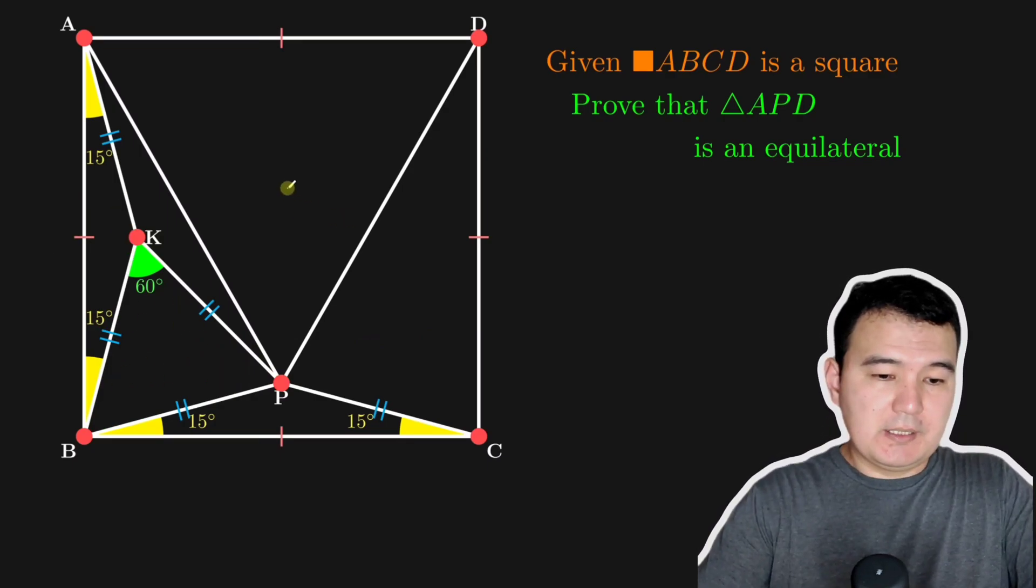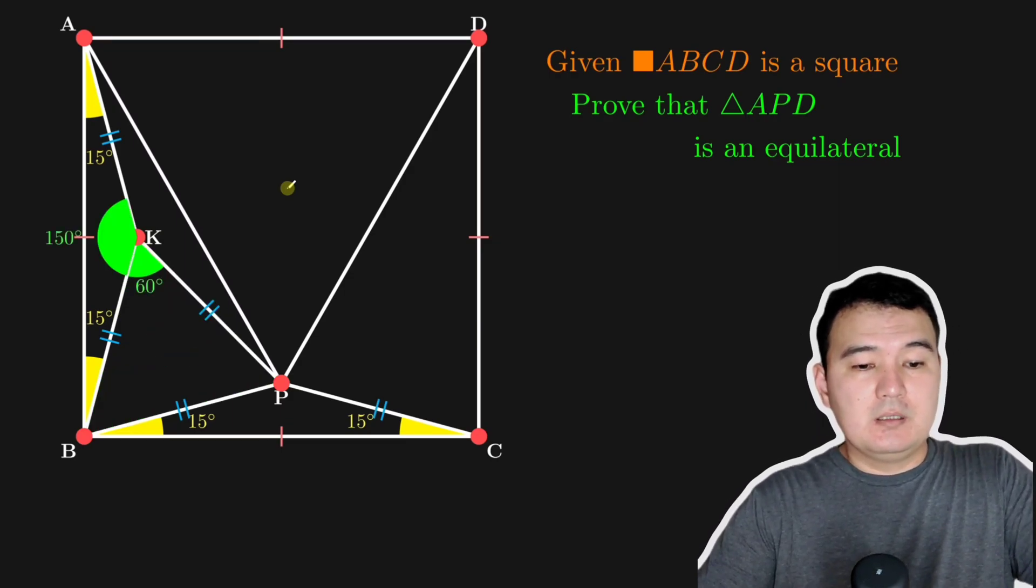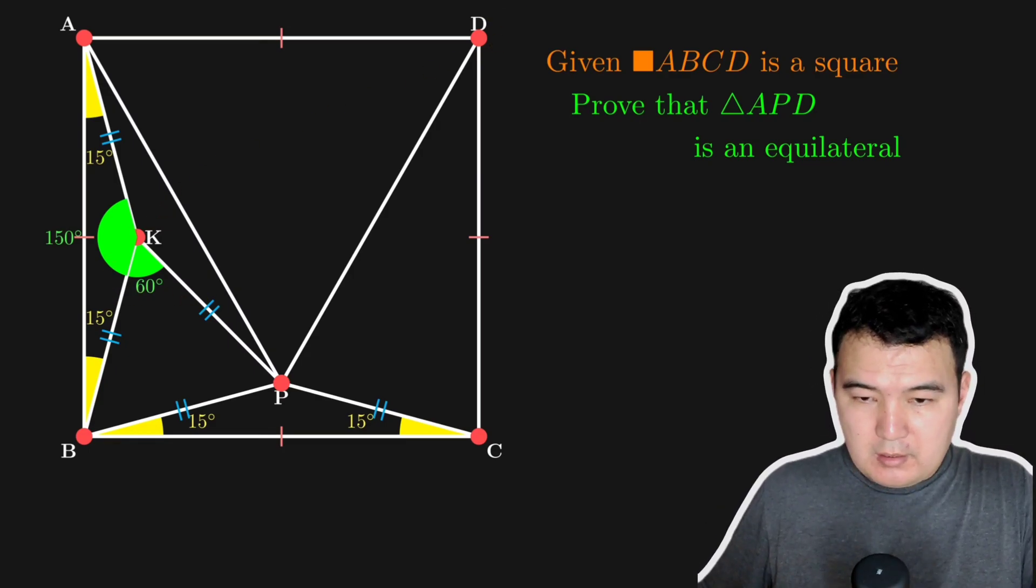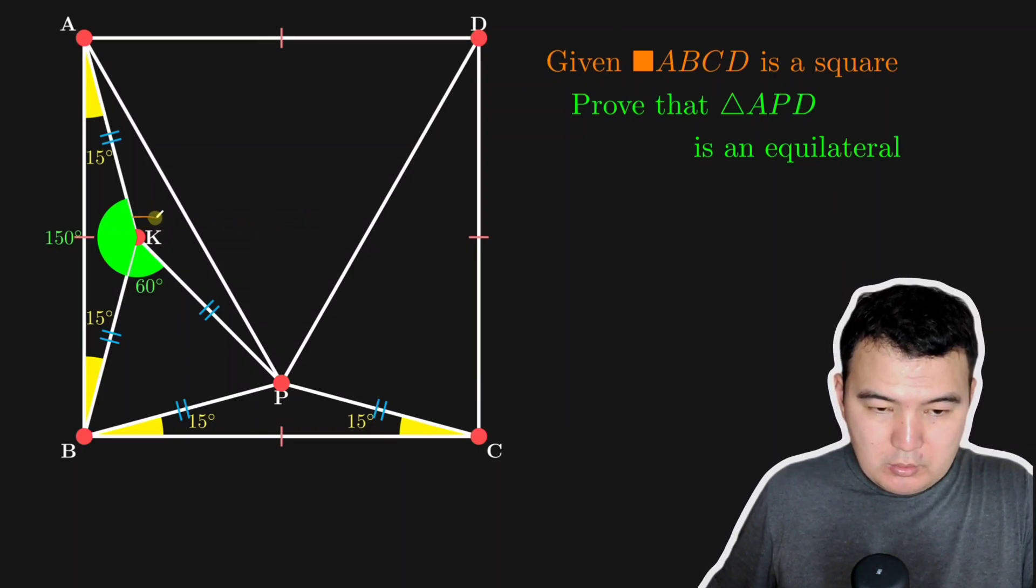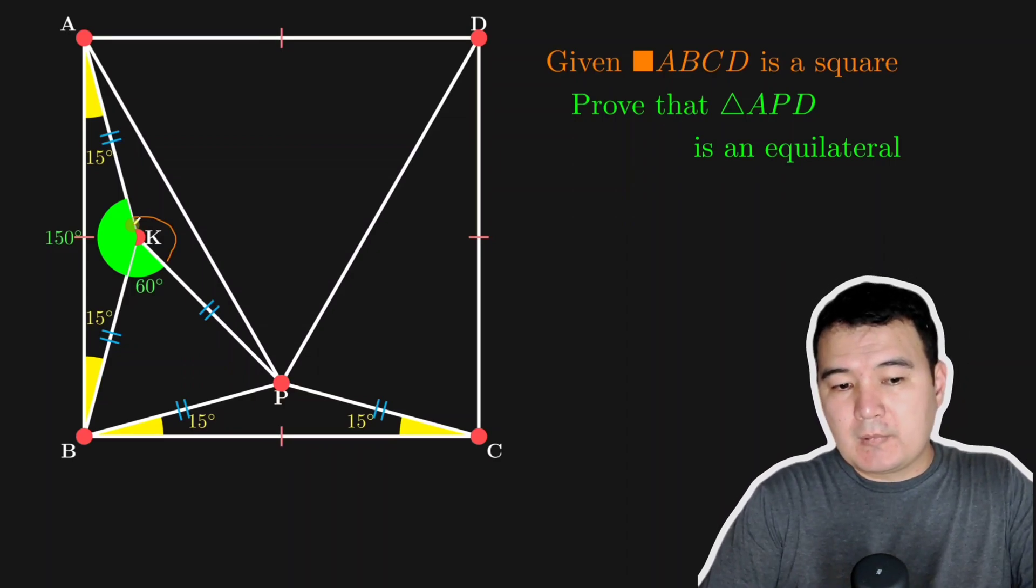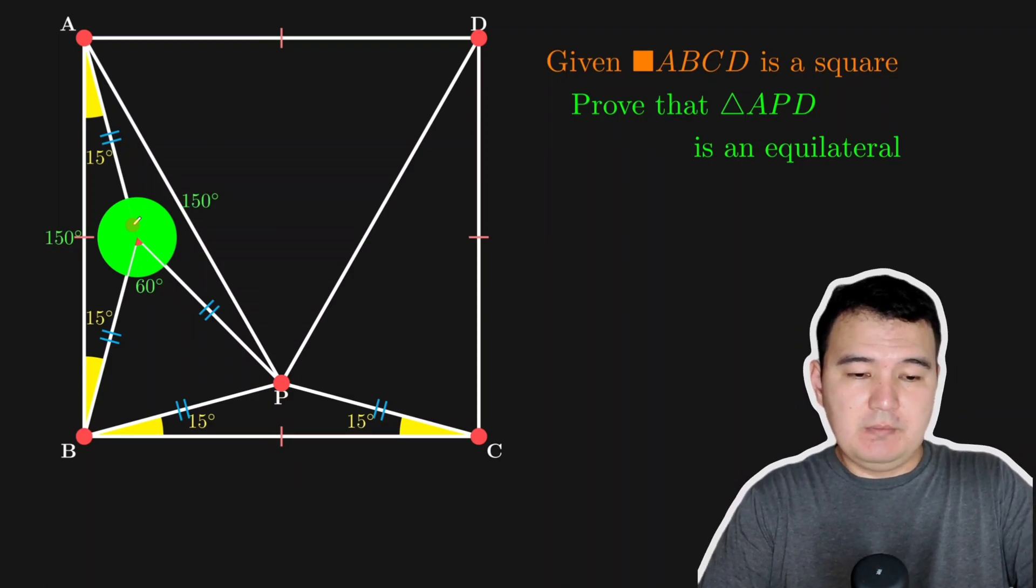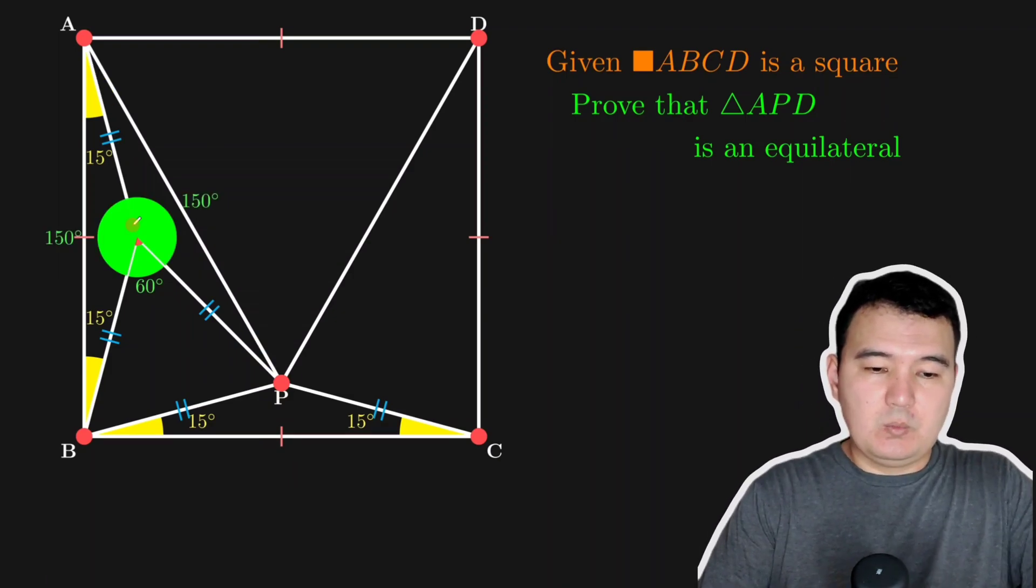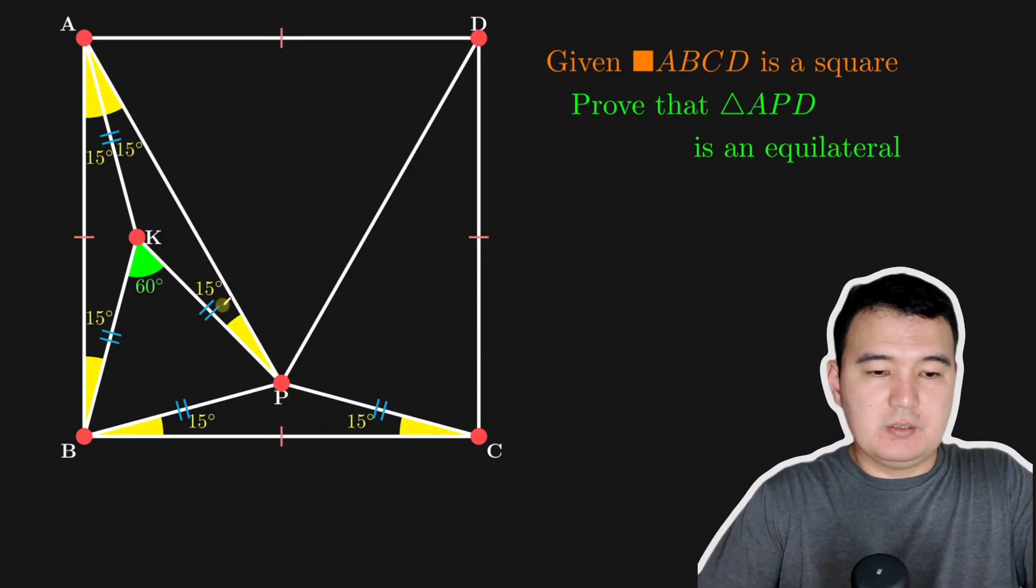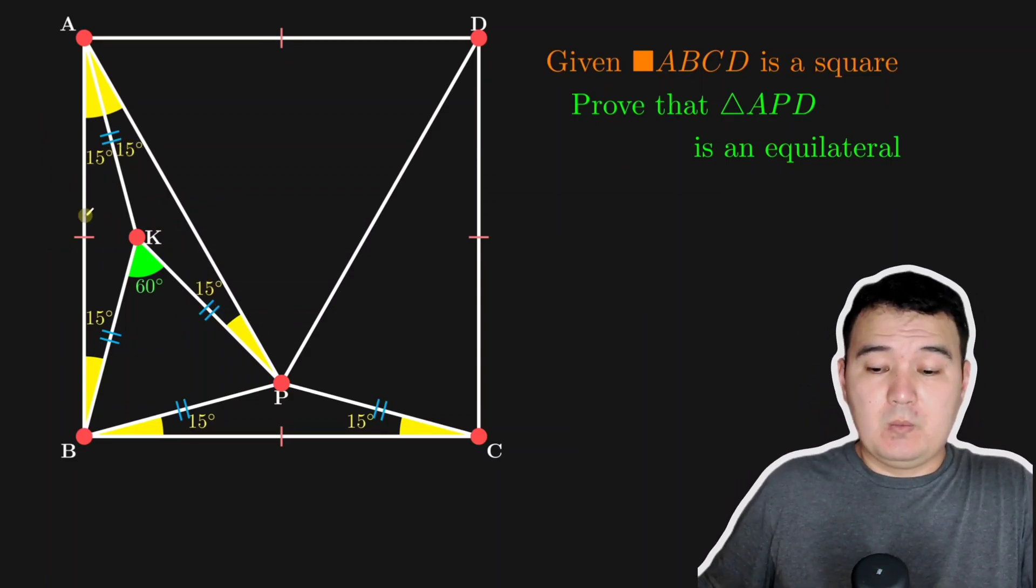Also, it's easy to compute this angle because of 15, 15 and 150. So now we can do the measure of this angle because we need 360 degrees on the circle. So that should be 150 as well, because 150 and 60, 360. So with this 150 degrees and this to be isosceles, you see that this is also 15 degree, 15 degree here, 15 here, 15 here.